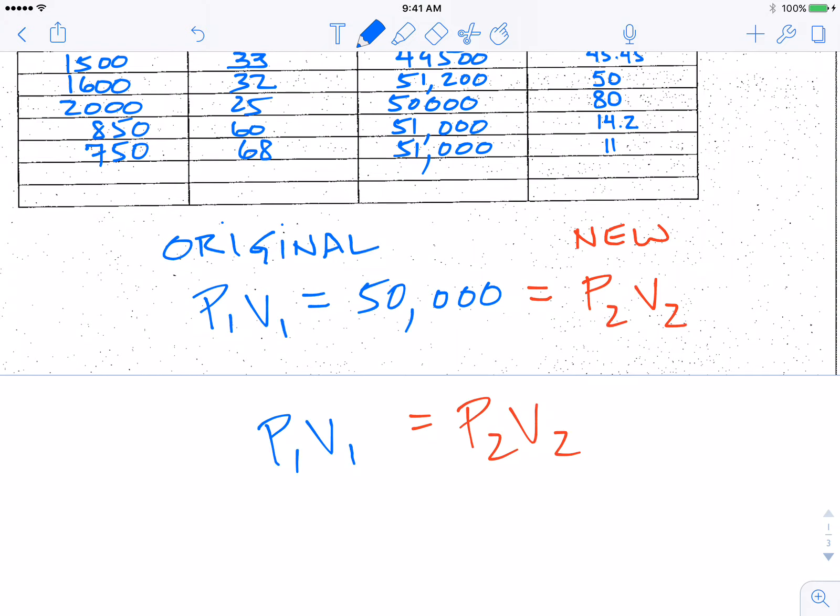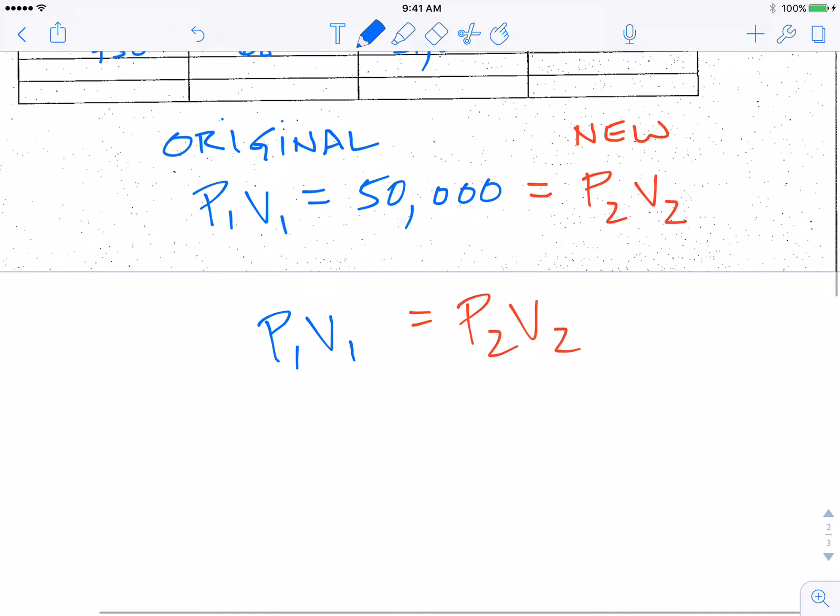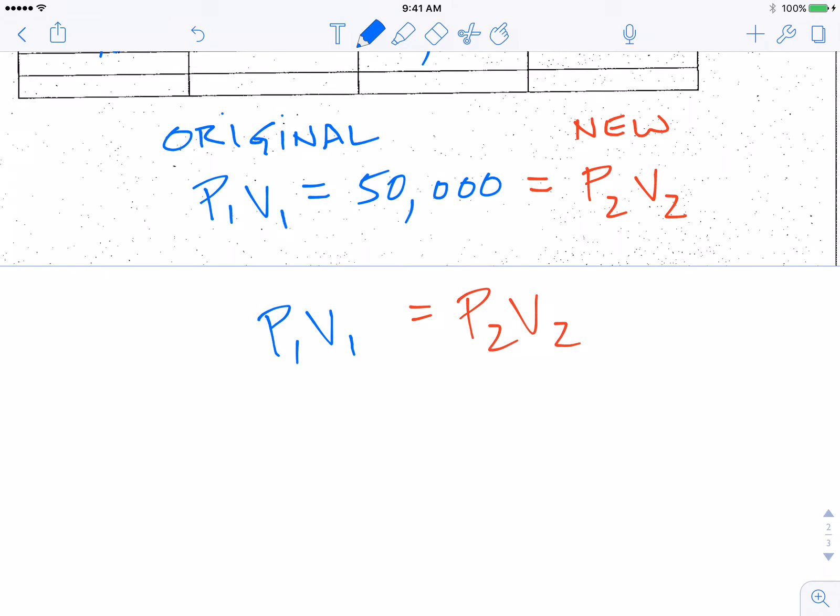Similarly, if they have a gas at a certain pressure and volume and they want to achieve a certain pressure, they will know what volume to put it at. If I was explaining this in algebra, if we know three of these four variables, we can figure out the fourth.